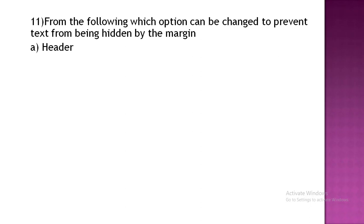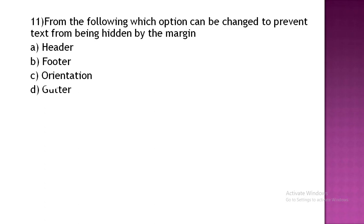Which option can be changed to prevent text from being hidden by the margin? Option C: orientation. Option D: gutter. The correct answer is Option D, gutter.